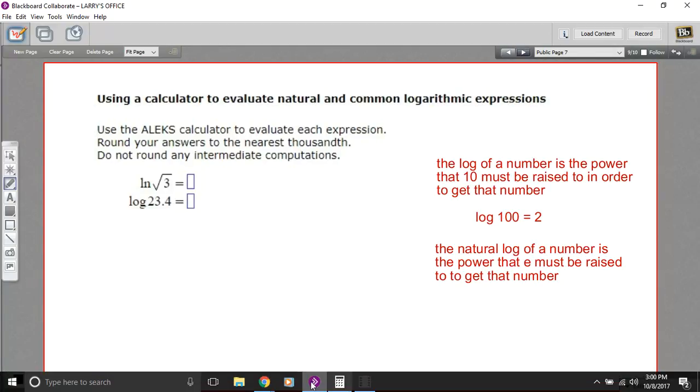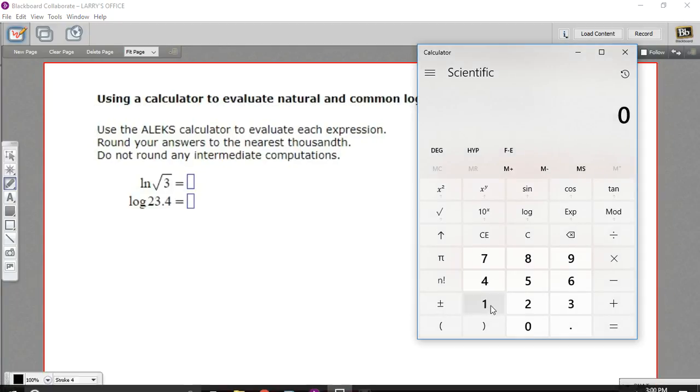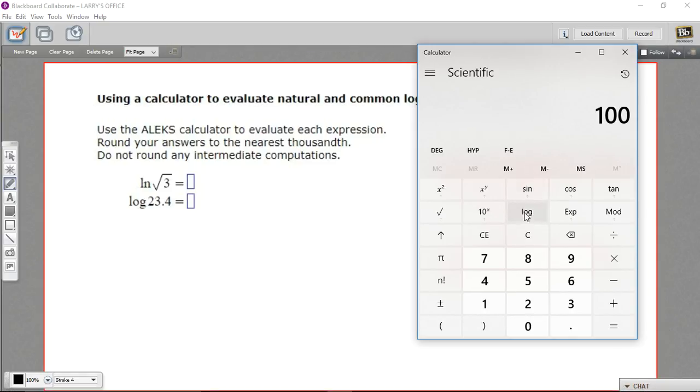So, for example, let me show you on the Windows calculator. If I took the log of 100, here's my log key. I've typed in 100. I'm going to press the log key. What am I going to get? Well, I'm going to get the power that 10 is raised to to get this number I started with. And 10 raised to the second power is 100. So I should get 2 here. And there we go.